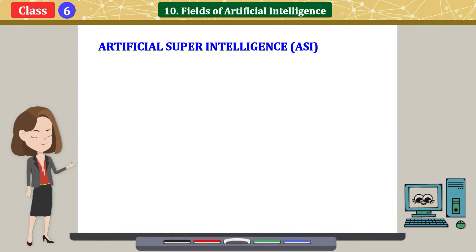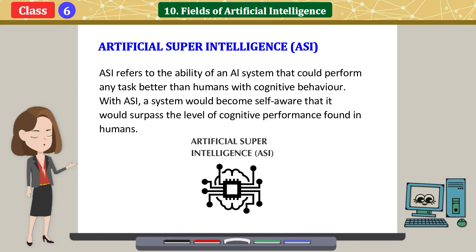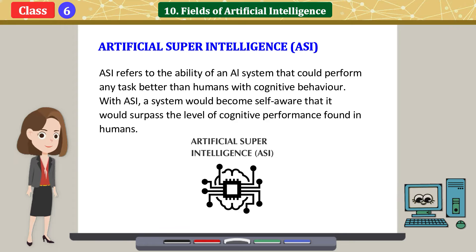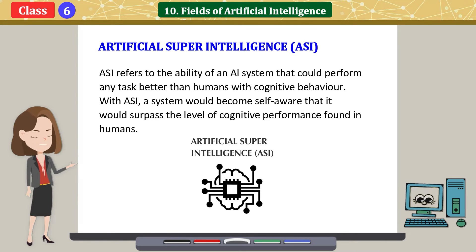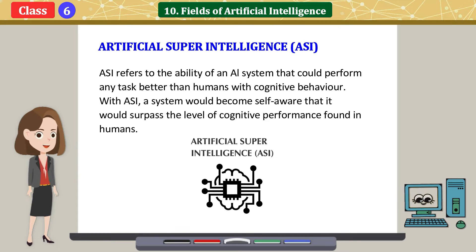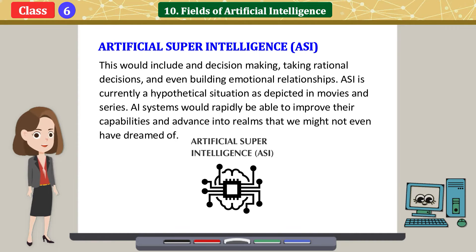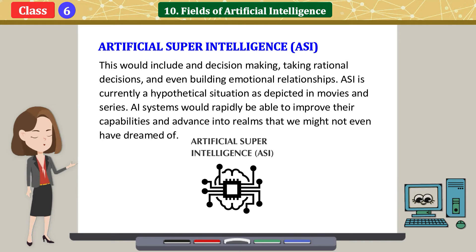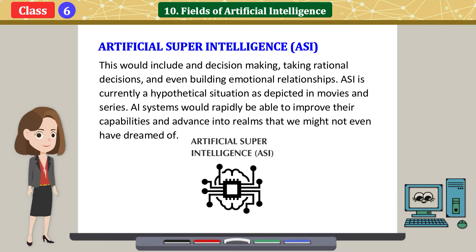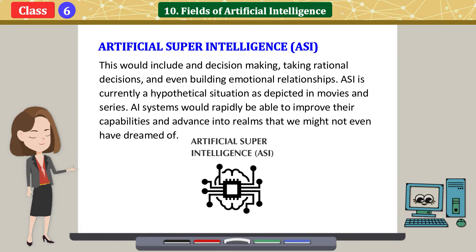Artificial Super Intelligence refers to the ability of an AI system that could perform any task better than humans with cognitive behavior. With this, a system would become self-aware and surpass the level of cognitive performance found in humans. This would include decision-making, taking rational decisions, and even building emotional relationships. This is currently a hypothetical situation as depicted in movies and series. AI systems would rapidly be able to improve their capabilities and advance into realms that we might not even have dreamed of.